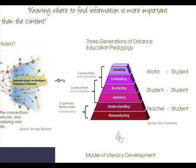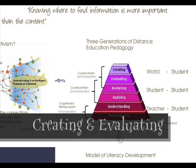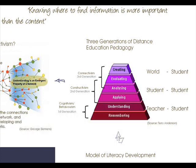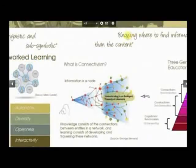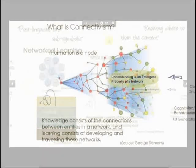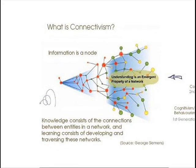Here we are actually creating and evaluating knowledge that we find out in the world. So we have moved from understanding and remembering to actually evaluating and creating knowledge. This has been formulated by George Siemens and Stephen Downs as a pedagogic theory called connectivism, where information is a node, understanding is an emergent property of a network, knowledge consists of the connections between entities in a network, and learning consists of developing and traversing these networks.